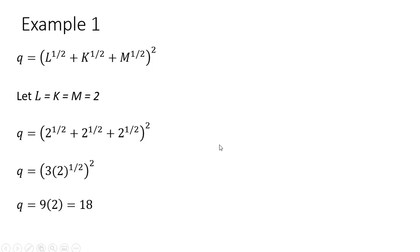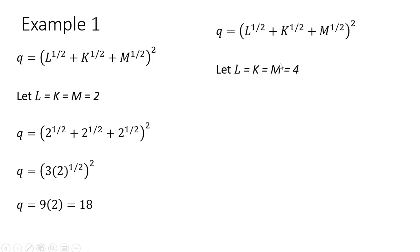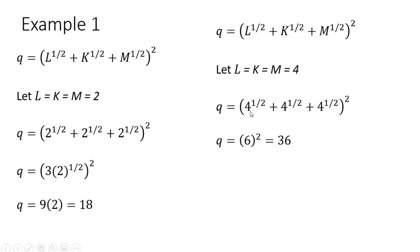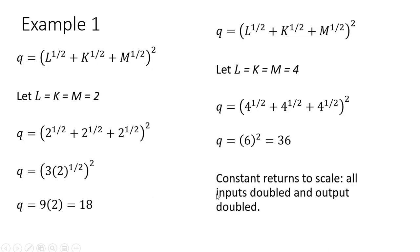Now we want to see what happens if we were to double all our inputs. So let's let K, L, and M now equal 4 — a doubling of their previous values. Plugging 4 into the production function: the square root of 4 is just 2, and we've got 3 of those, so 6 squared is 36. We have constant returns to scale — all the inputs were doubled and output exactly doubled.